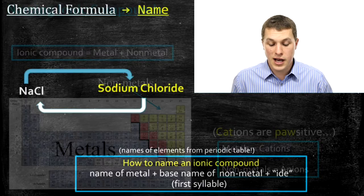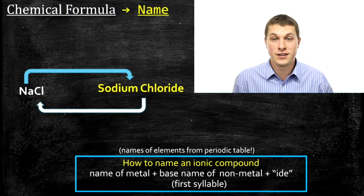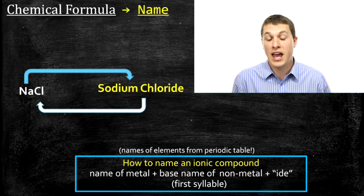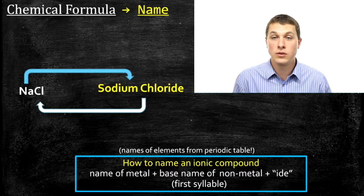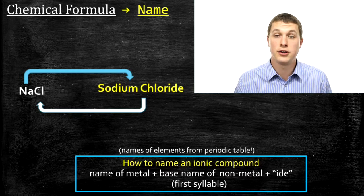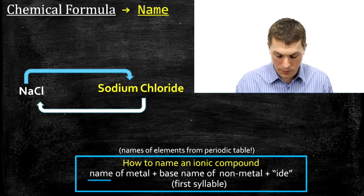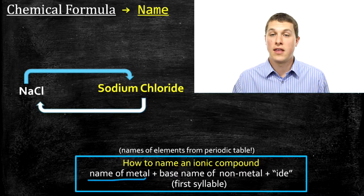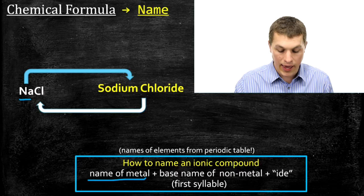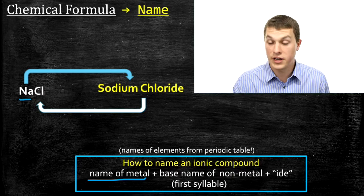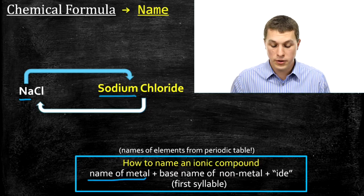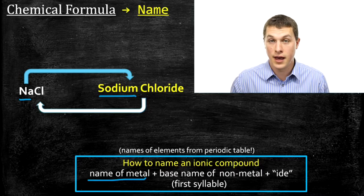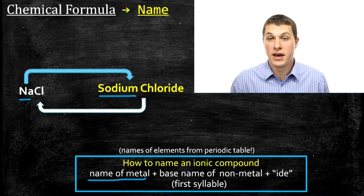We're going to first talk about the rules for going from a chemical formula — given something like NaCl — to the name sodium chloride. The first thing you do is write down the name of the metal. You always write out the full name of the metal, and the name of the metal always comes first. In this case, Na is sodium. Also important to remember: whenever we list an ionic compound like NaCl, we always list the metal first.